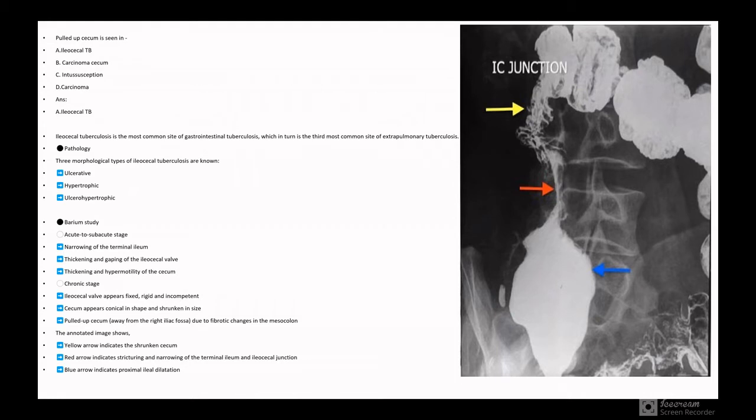Pathologically, it can be ulcerative, hypertrophic, or ulcerative-hypertrophic. In barium study we can see acute stage: narrowing of the terminal ileum, thickening and gaping of the ileocecal valve, thickening and hypermotility of the cecum. In chronic stage: ileocecal valve appears fixed, rigid, and incompetent, cecum appears conical in shape and shrunken in size, pulled up cecum away from the right iliac fossa due to fibrotic changes in the mesentery.